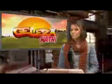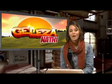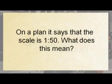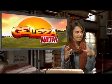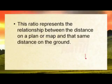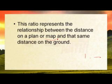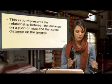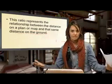On a plan, you'd say the scale is 1 to 50. What does this mean? That is a good question. On a plan, it says that the scale is 1 to 50. So this ratio — because that's a ratio — anything 1 to something else is a ratio. What this represents is a relationship between the distance on a plan or the distance on a map and that same distance on the ground. So it's a relationship between the map and reality.